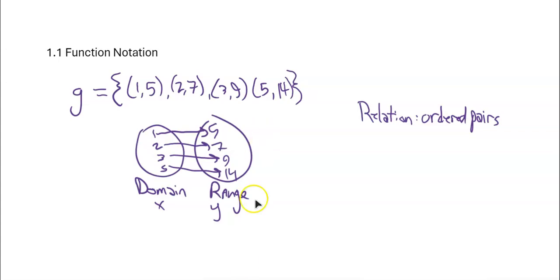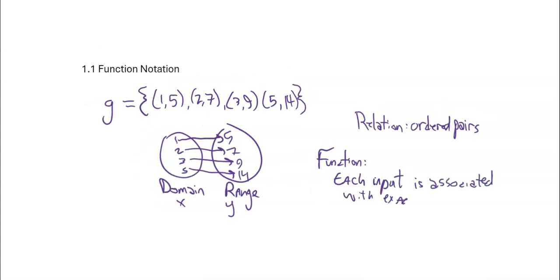So you can see in this that I have this collection that everything here goes to one thing there. Now a function is a particular type of relation. A function has some specific requirements, and they are basically that each input is associated with exactly one output. So notice one goes to five, it doesn't go anywhere else. Two goes to seven, it doesn't go anywhere else. So this is a function. In other words, if you tell me what the input is, I can tell you the output is always 9. Like if the input is 3, the output is always 9. Right. So this is a function.